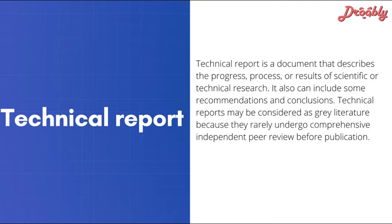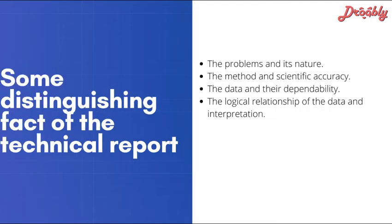Let's talk about some distinguished facts of technical reports — or errors that occur when writing one. Because technical reports contain so much data and stats, scientific accuracy and method are very important. Key concerns include: the problem and its nature, the data and its dependability — because if your data is incorrect the whole report will be incorrect — and the logical relationship of the data and interpretations.